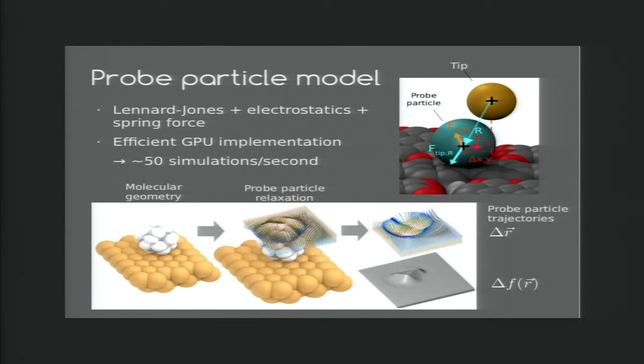So the pipeline of the simulation process: we have some molecular geometry. Then we allow the probe particle to relax in the force field of the molecule. And then we take these particle trajectories and integrate them with some theoretical formula to get the actual signal of frequency shift that one would get out of an actual experiment. And we have implemented this on GPU so that we can actually get up to about 50 simulations per second, several orders of magnitude faster than experiments.